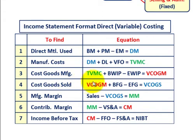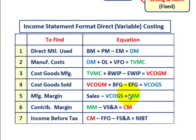For step four, variable cost of goods sold: take variable cost of goods manufactured, add beginning finished goods, subtract ending finished goods — that gives us variable cost of goods sold. For step five, manufacturing margin: take sales dollars and subtract variable cost of goods sold to get manufacturing margin. For step six, contribution margin: take manufacturing margin and subtract variable sales and administrative expenses to get contribution margin.